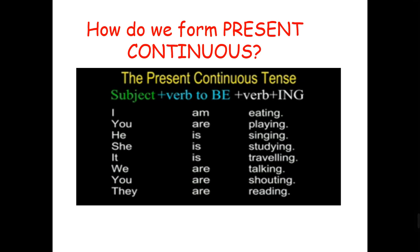Now let's move on to the present continuous tense, which is close yet different from the present simple. How do we form it? We start with the subject, then add verb 'to be' according to the subject, and then verb plus ing. Like: 'I am eating,' 'you are playing,' 'he is singing,' 'she is studying,' 'it is traveling,' 'we are talking,' 'you are shouting,' 'they are reading.' 'Am' comes with I, 'are' with you/we/they, and 'is' with he/she/it, and then you add ing to the verb.